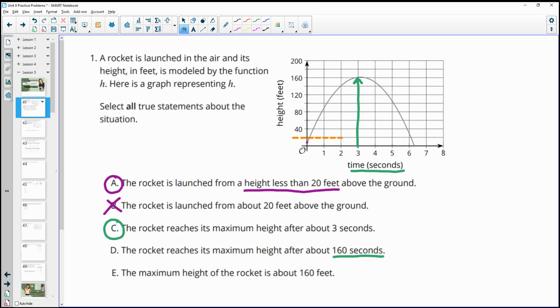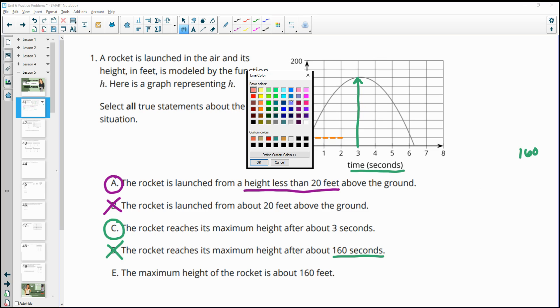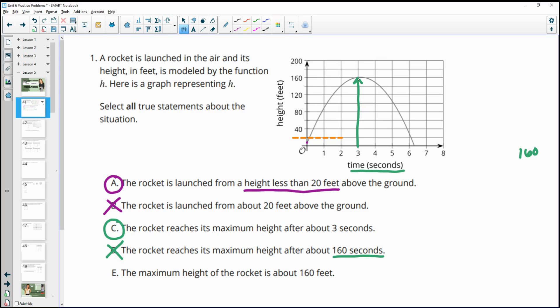Then it says the rocket reaches its maximum height after 160 seconds, which is false. It's reaching it at three seconds. We only graphed to eight seconds, so 160 seconds is significantly outside of our graph. What the 160 actually is, is the height of our graph. So that's where the maximum happens, 160 feet above the ground.